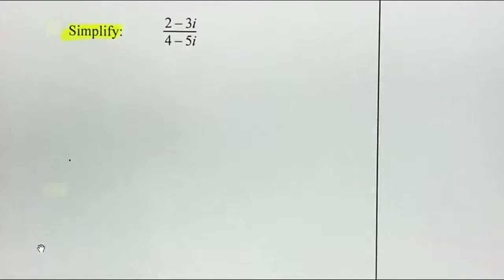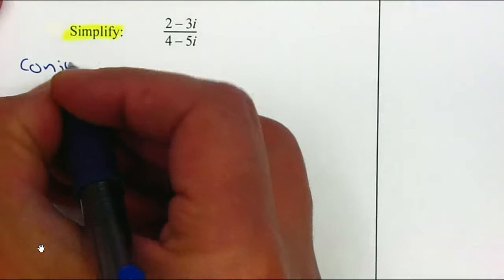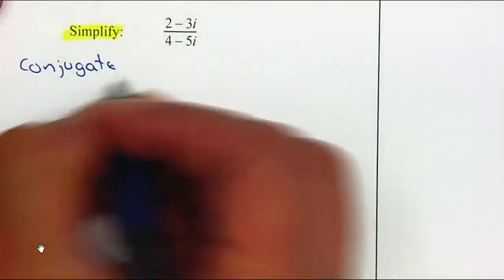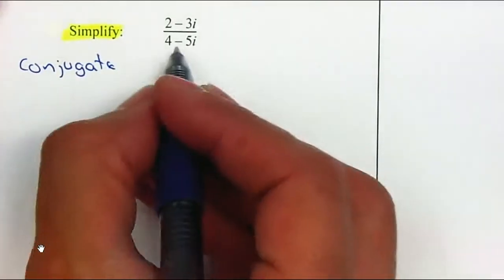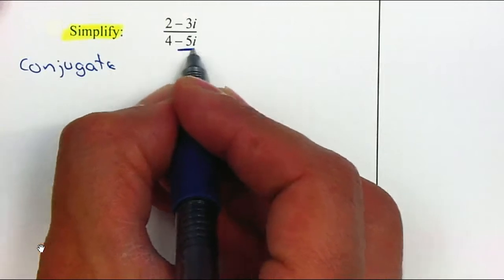I need to multiply by something called the conjugate. The conjugate will allow us to get rid of the imaginary numbers, so we don't have an imaginary number in the denominator.